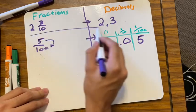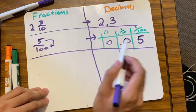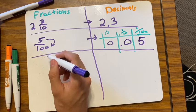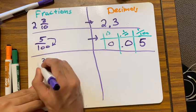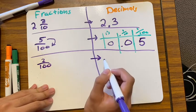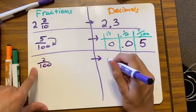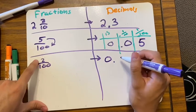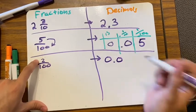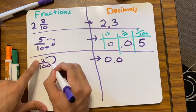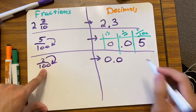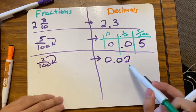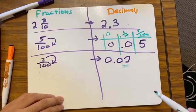Let's do another one: two hundredths. Do you have a whole number — ones? No. Do you have a tenth? No. The two goes in my hundredths place, right there. So the answer is 0.02.